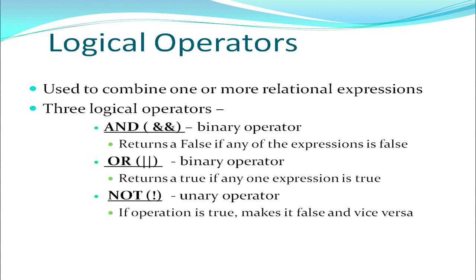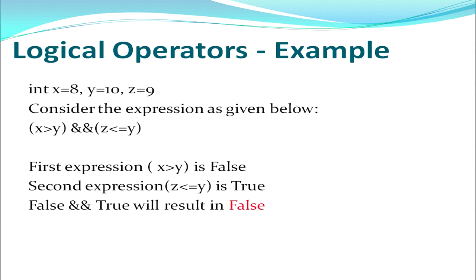The OR operator returns true if any one expression is true. The NOT operator reverses the output — if the operation is true it makes it false, if false it makes it true. In the example, x > y is false and z <= y is true, but since both are combined by the AND operator — which gives true only if both are true — since x > y is false, the final result will be false.